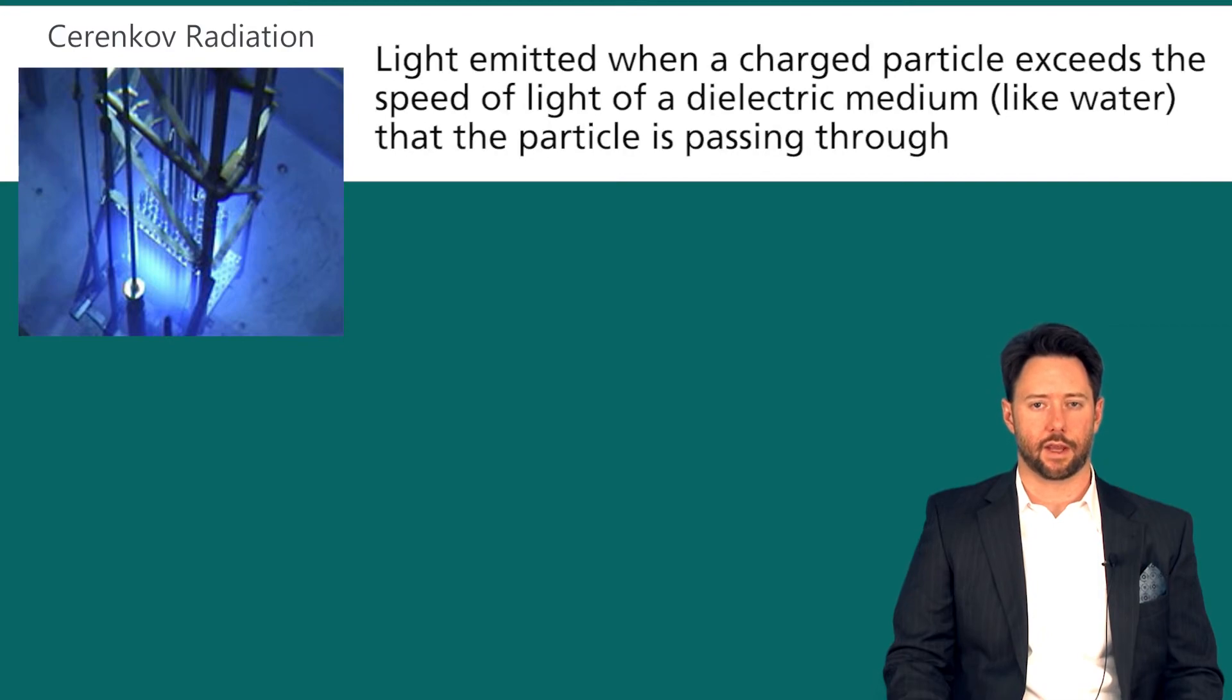But what specifically is Cherenkov radiation? The definition is light emitted when a charged particle exceeds the speed of light of a dielectric medium like water that the particle is passing through. You can't exceed the speed of light in a vacuum but you can exceed it in different media, and so if a particle is moving too fast it has to radiate out energy and it does that through Cherenkov radiation.